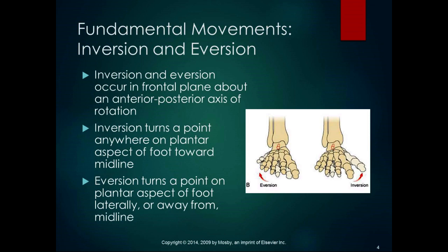Inversion and eversion occur in the frontal plane about an anterior-posterior axis of rotation. Inversion turns a point on the plantar aspect of the foot toward the midline, and eversion turns a point on the plantar aspect of the foot away from the midline. The talocrural joint, or ankle joint, doesn't move in this plane, so inversion and eversion come from the other joints of the foot — combinations of movements of the tarsals and metatarsals.